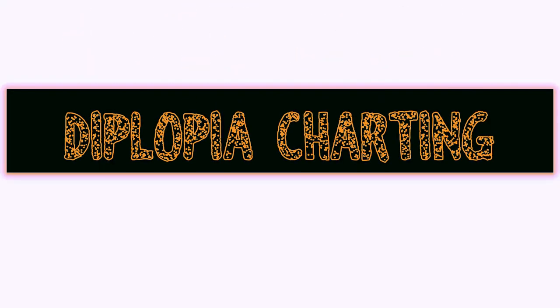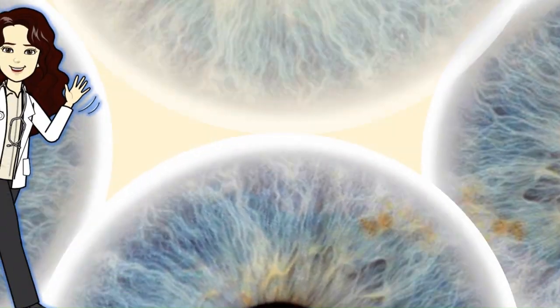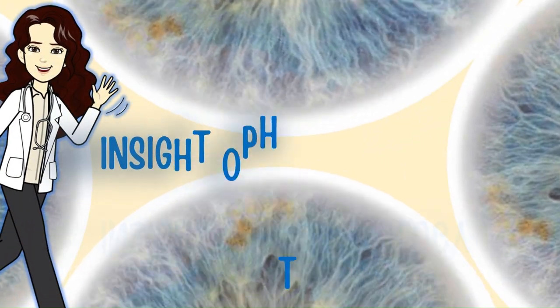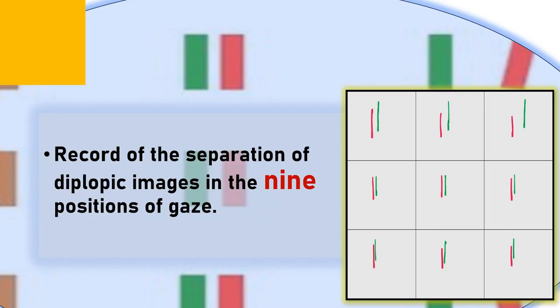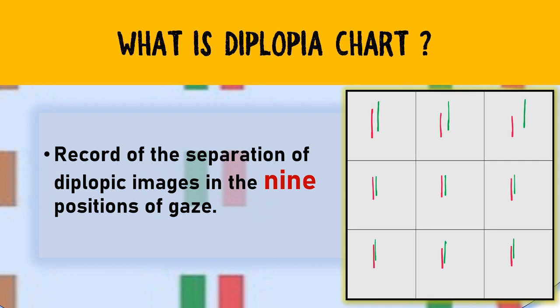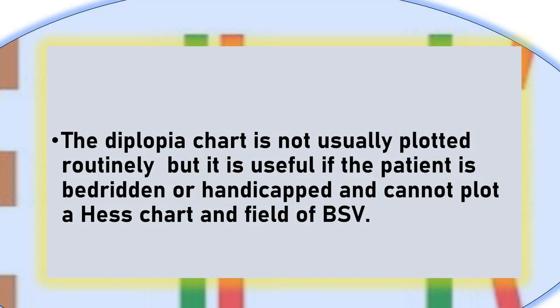It's time to decode diplopia charting. Diplopia charting is basically a record of separation of diplopic images in nine positions of gaze. It is not done routinely; however, it can be done in patients where we cannot do a HES chart or other tests for binocular single vision, like in those who are bedridden or handicapped.